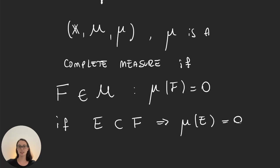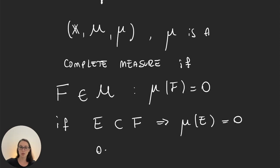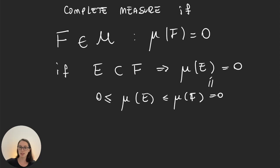This definition might seem a bit silly, because of the monotonicity that we know mu satisfies for just being a measure — we know that the measure of E would be smaller than or equal to the measure of F. And that gives us that the measure of E has to be 0, because we would have 0 ≤ mu(E) ≤ mu(F) = 0. So this immediately implies this.